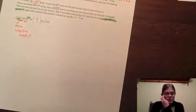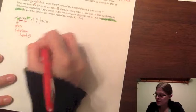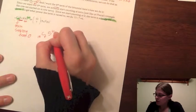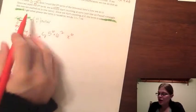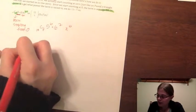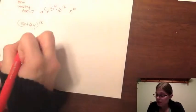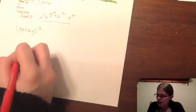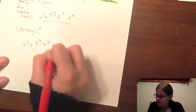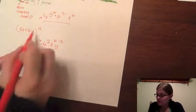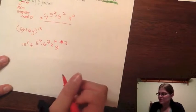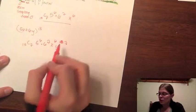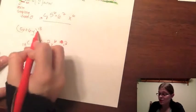So we do 13 choose 7, times 5 to the sixth times x to the sixth, times 6 to the seventh — and that gives my coefficient times x to the sixth. Now if I had a variable in the second term as well, like 5x plus 6y to the thirteenth, the only thing that would change is I'd add y to the seventh power. So 13 choose 7, times 5 to the 6th times 6 to the 7th, times x to the 6th times y to the 7th — because 6 and 7 add to 13.